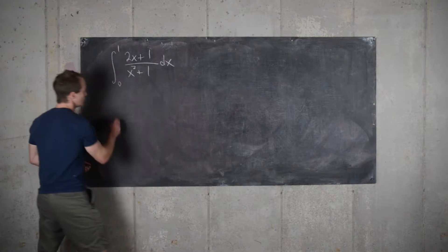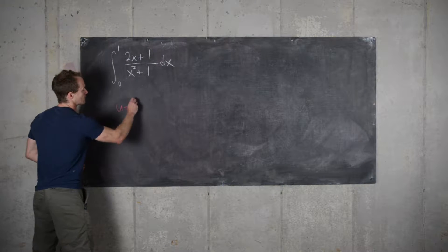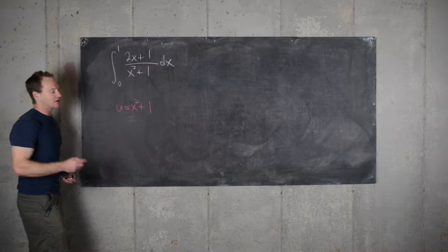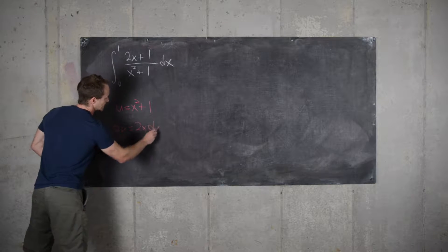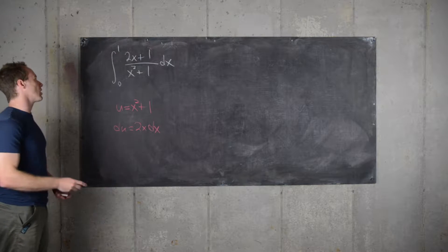So if we let u equal the denominator of this function, that gives us du equals 2x dx, which is part of the numerator.